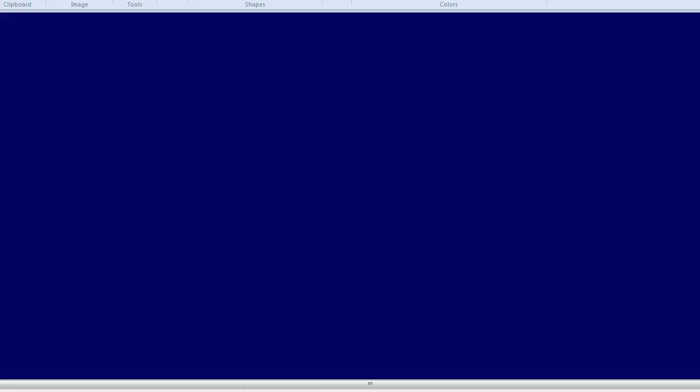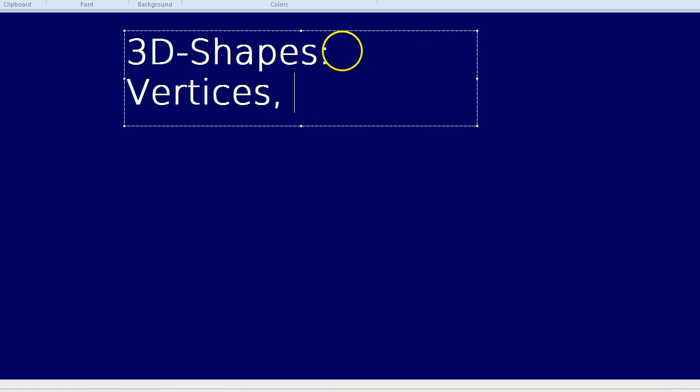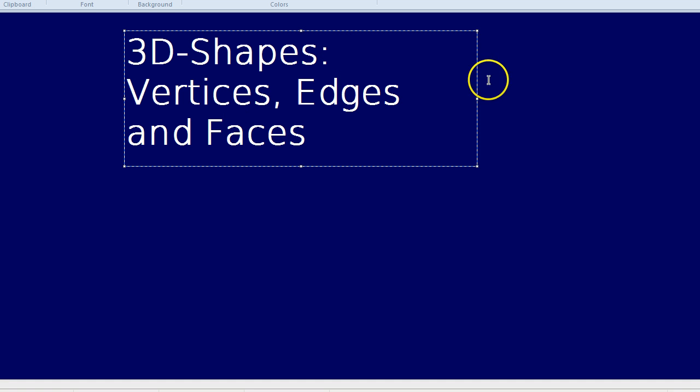There's at least three interesting things you can talk about with any 3D shapes, and that is how many faces does it have, how many vertices does it have, and how many edges does it have. This video is going to be about 3D shapes, vertices, edges and faces. What are each of those things?